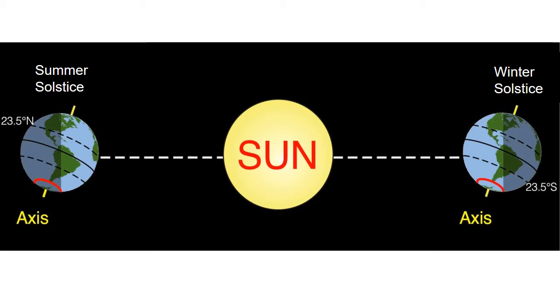The Arctic Circle is special because it marks the point where on the winter solstice, the shortest day of the year, the sun will not rise all day. There has been no sunlight. And on the summer solstice, the longest day of the year, the sun will not set.